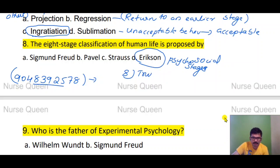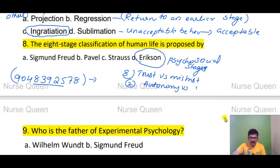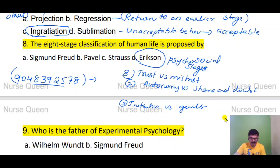The eight stages are: Stage 1 - Trust vs. Mistrust; Stage 2 - Autonomy vs. Shame and Doubt; Stage 3 - Initiative vs. Guilt; Stage 4 - Industry vs. Inferiority; Stage 5 - Identity vs. Role Confusion; Stage 6 - Intimacy vs. Isolation; Stage 7 - Generativity vs. Stagnation; Stage 8 - Integrity vs. Despair.